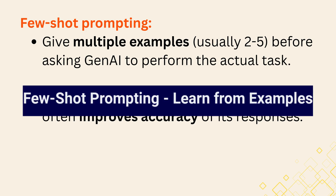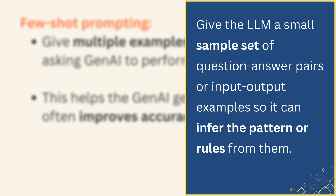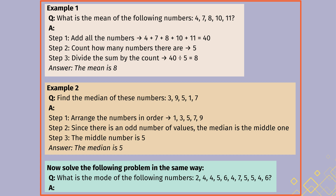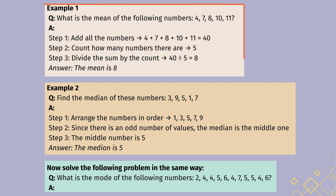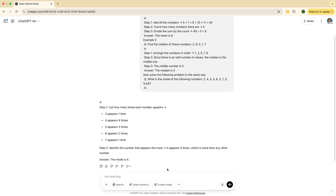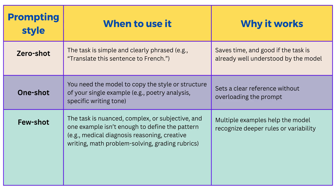If one example is good, a few examples can be even better. Few-shot prompting means you give the AI multiple examples of the task — usually 2 to 5 — before asking it to perform the actual task. You're showing the model a small sample set of question-answer pairs or input-output examples so it can infer the pattern or rules from them. This helps the AI generalize better and often improves accuracy. For example, I give ChatGPT two examples — one calculates the mean, the other the median — and by the time it reaches my actual question about the mode, it has seen how I expect the solution to be structured. This table looks at the different shot prompting styles, when to use them, and why they work.